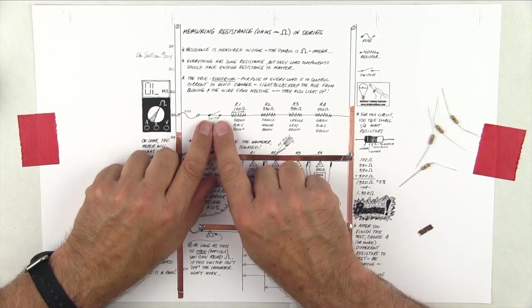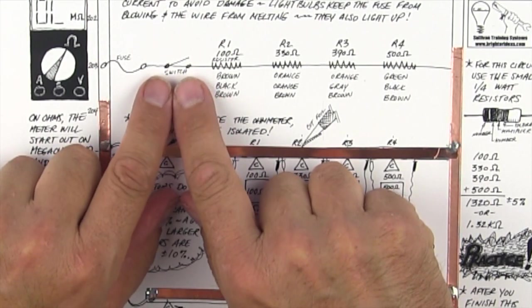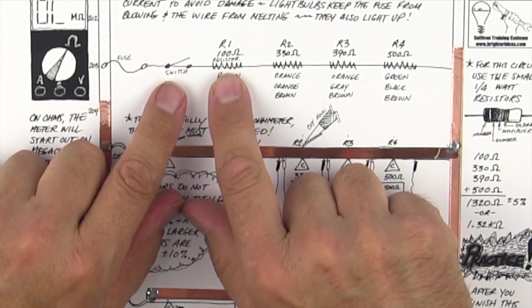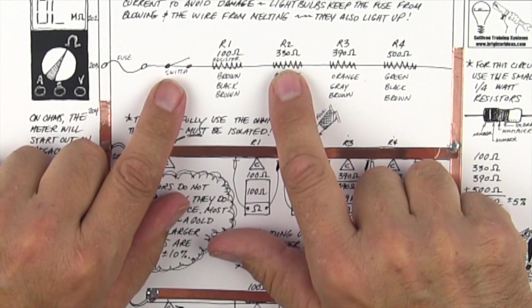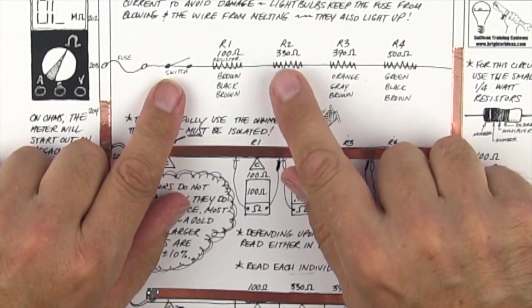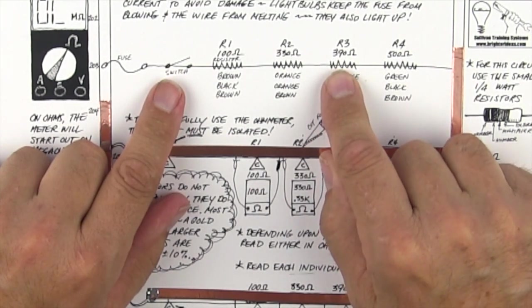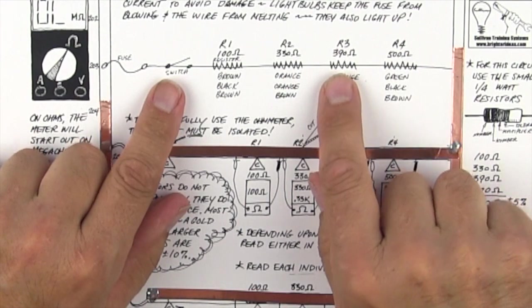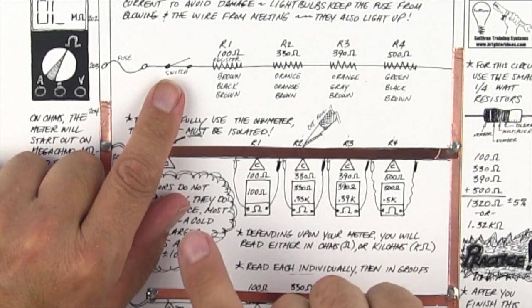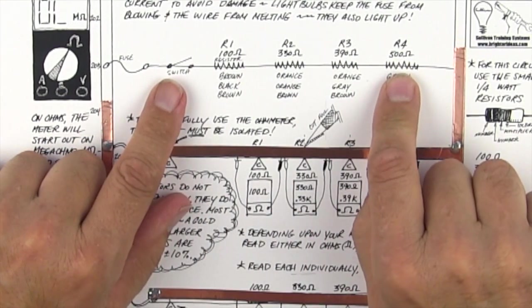What you do here is you simply add these up because they're in series. So it's 100, and 330 is 430, and 390 would make it 730 and 820, and then 820 with 500 would make it 1320.